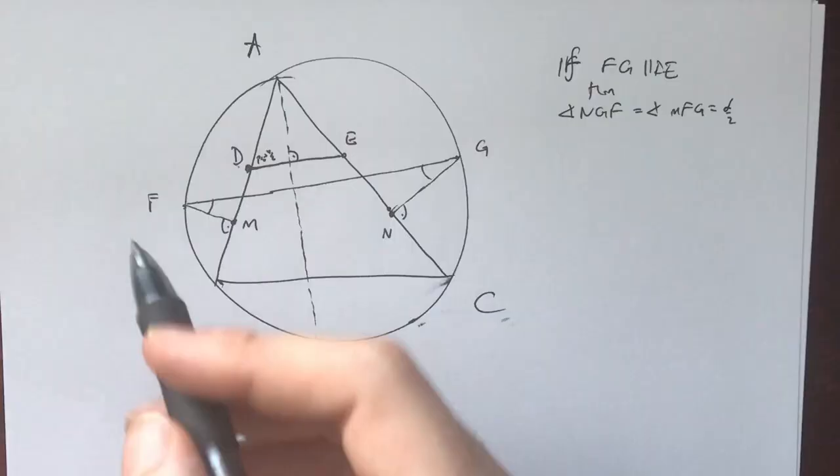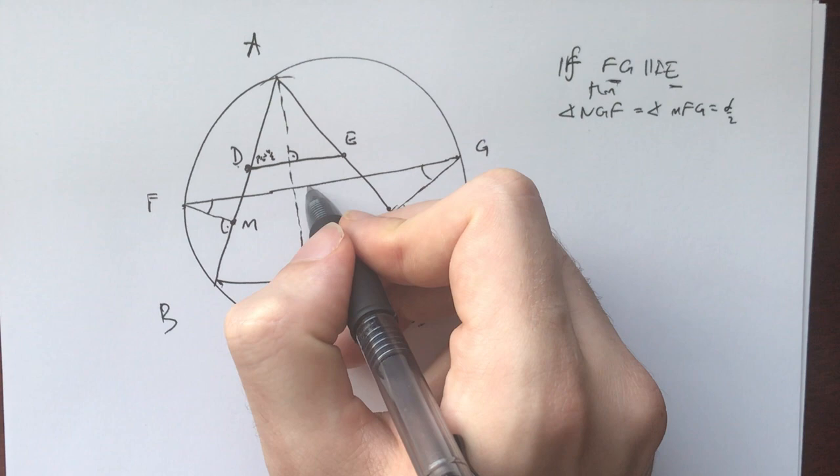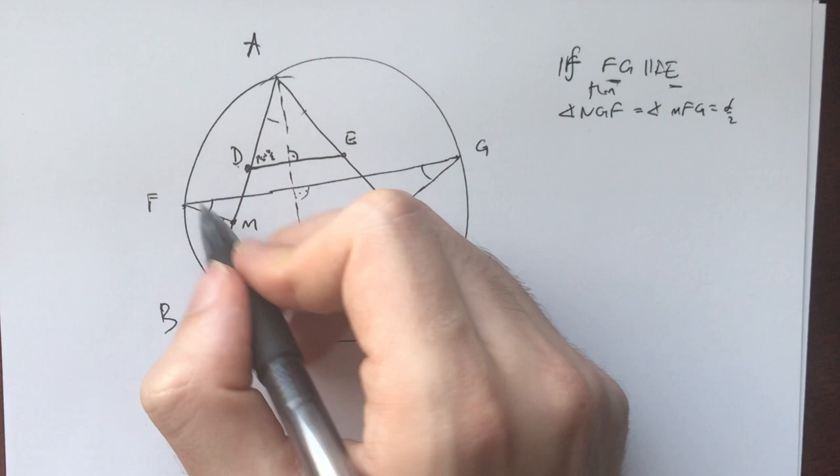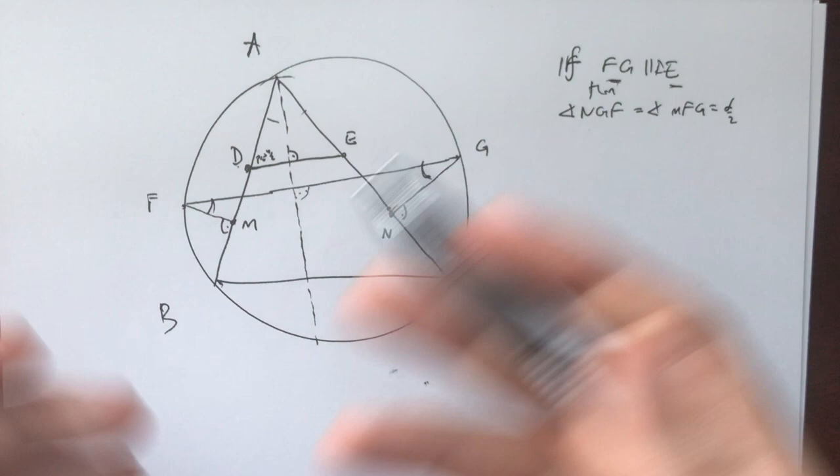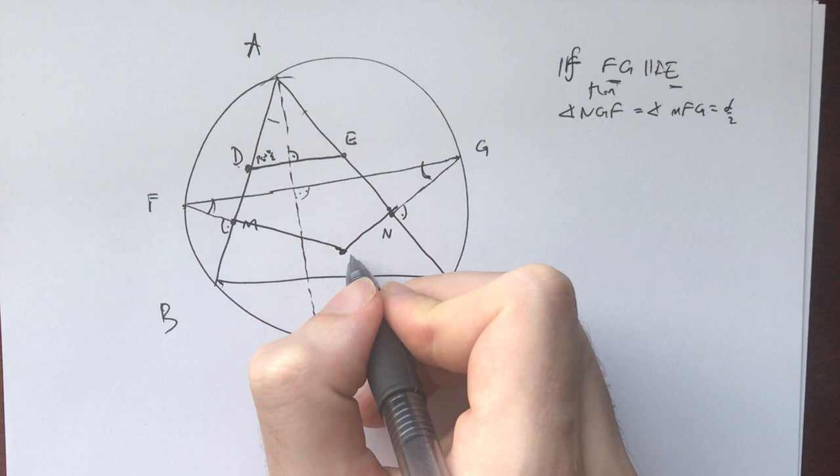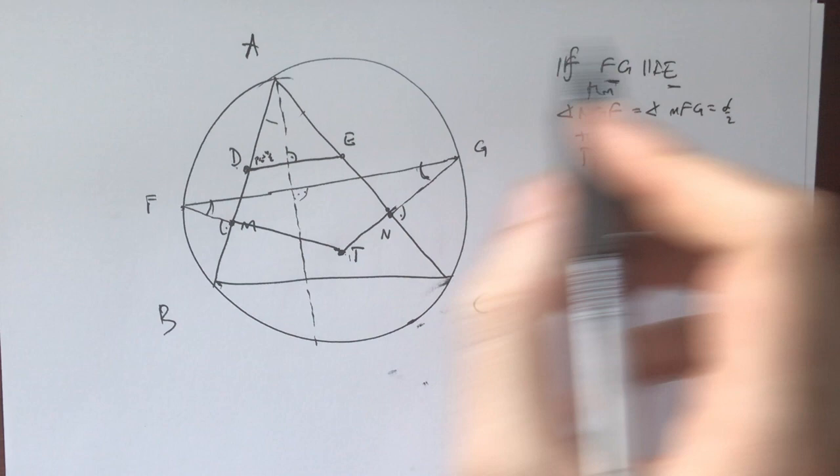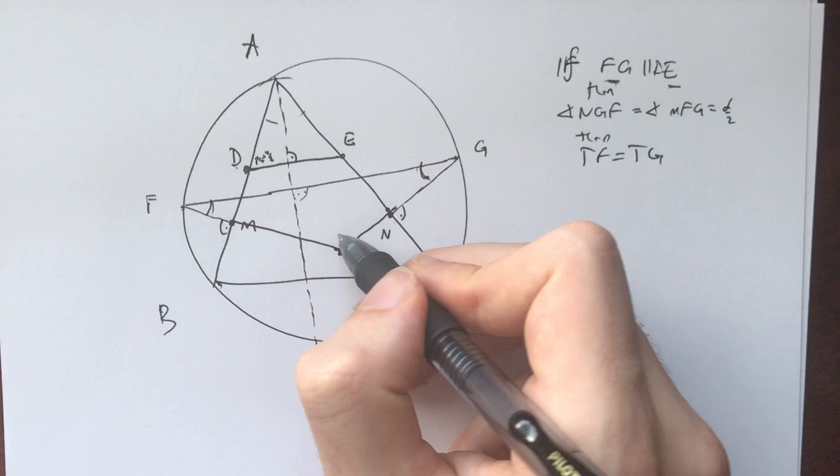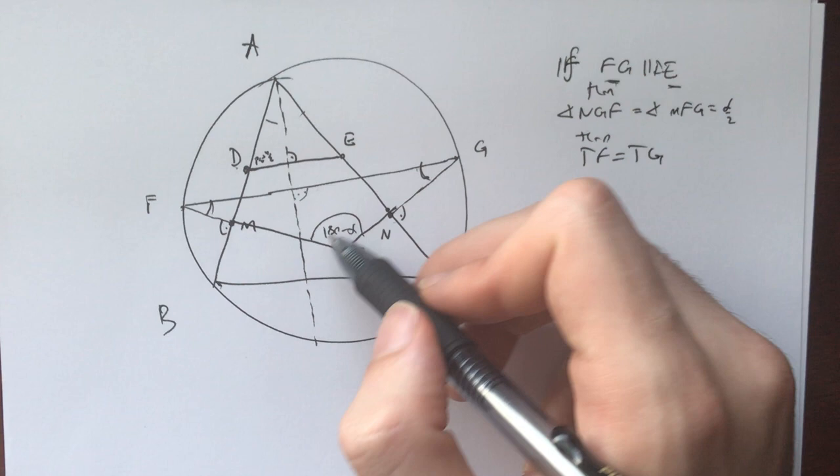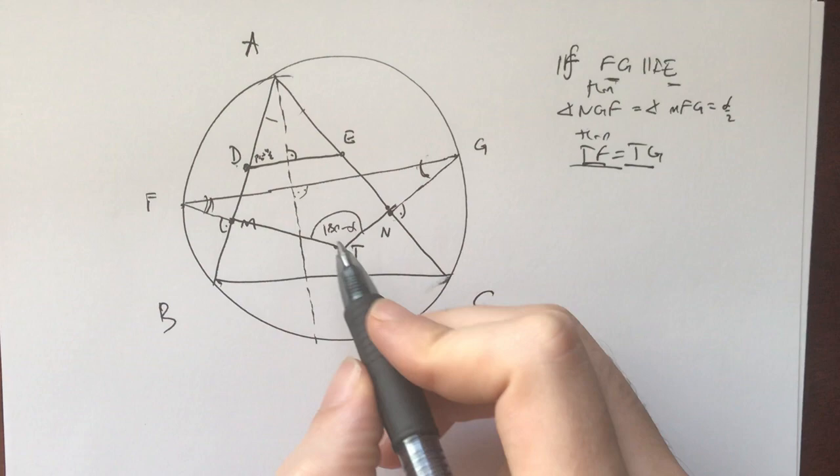We have that if FGB is parallel to DE, then these two angles are going to be alpha half. Why? Because this is 90, and this is alpha half. These four points are cyclic, these four are cyclic, and then both of these are alpha half. If I intersect these two at some point, call this point T, then I'll have TF is TG. Does the converse hold true? And the answer is yes. So now the only thing we need to prove is that TF is TG. Then we'll get that these angles are alpha half and alpha half, and then we'll finish the problem.